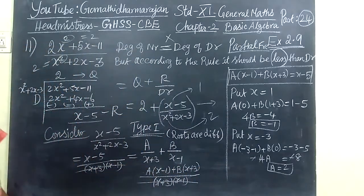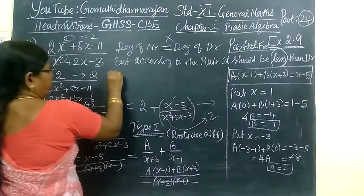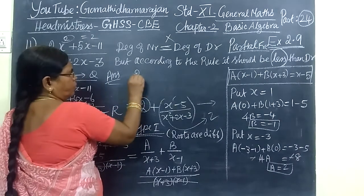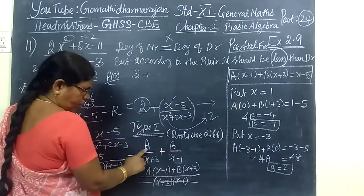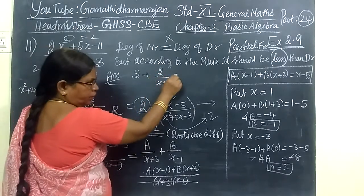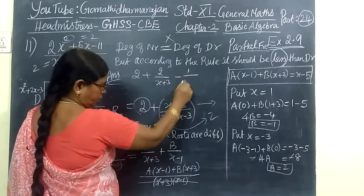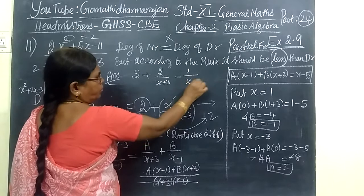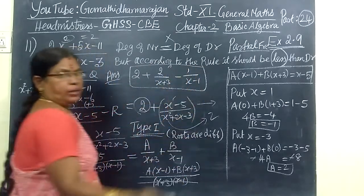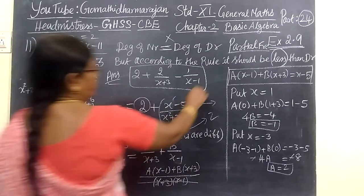So you just take and substitute here. The answer for this, 2 is the quotient plus. So 2 plus, what is the value of A? A equal to 2 by X plus 3. Then B equal to minus 1. Minus 1 by X minus 1. So this is the answer. This is very simple. We check the answer once again. Here 2, then 2, then minus 1. So this is the correct answer.